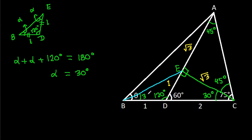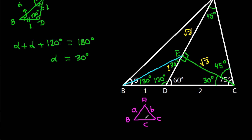So this angle will be 30 degrees and this angle will be 30 degrees. Also, in any triangle ABC, if AB is a, AC is b, and BC is c, and this angle is theta, then c squared equals a squared plus b squared minus 2ab cos theta.